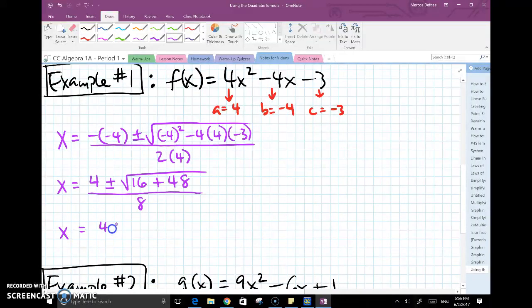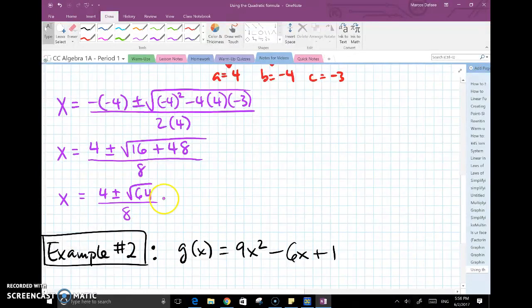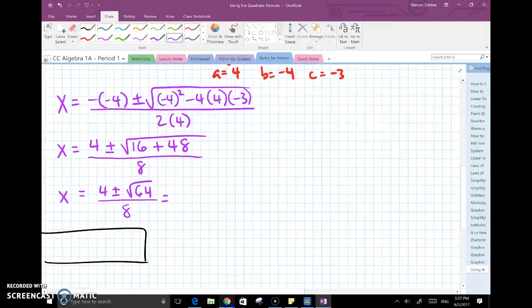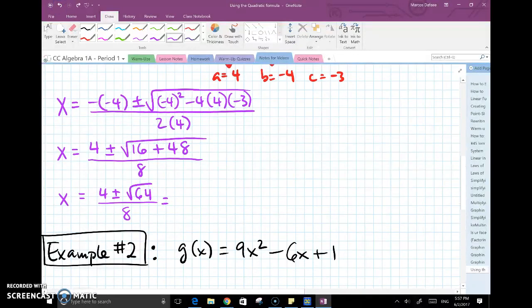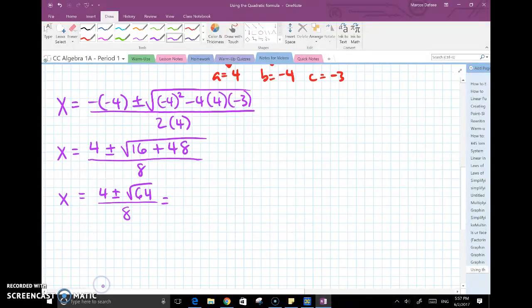The denominator is just a regular 8. Continuing on, this would be 4 plus minus radical 64. Now 64 is a perfect square, which is always a good thing because I can easily take that and make it into an 8. So this is now 4 plus minus 8 all divided by 8.